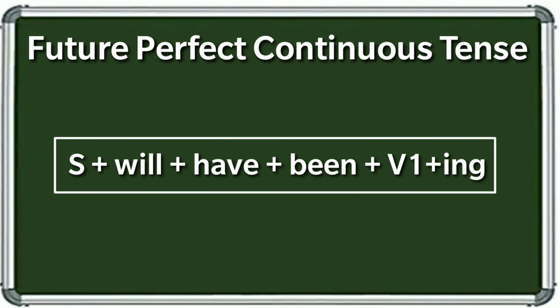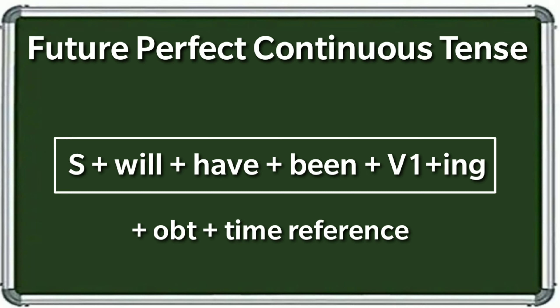आज का format कहता है कि यूज करिए सबसे पहले subject, उसके बाद will have been — ऐसा ही याद करके यूज करिए — और उसके बाद V1+ing लगेगा. यहाँ पर V1 verb का first form है जिसमें ing लगने से इसे verb के present participle के नाम से जाना जाता है. पूरा format है: subject + will + have + been + V1+ing + object + time reference. Will have been एक साथ एक auxiliary verb है और V1+ing present participle है.